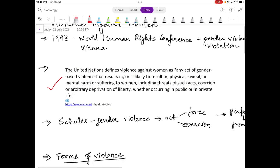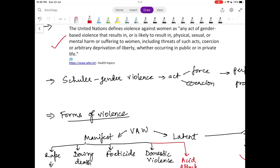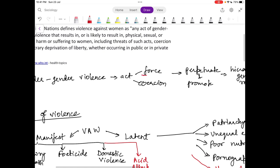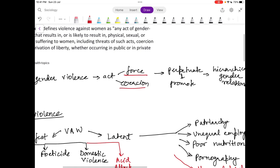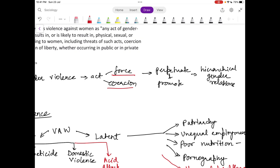There is a definition by Schuller. Schuller defines gender violence as an act that involves force or coercion such as to perpetuate and promote hierarchical gender relations.